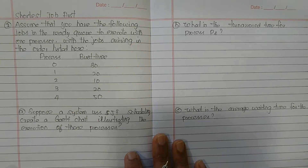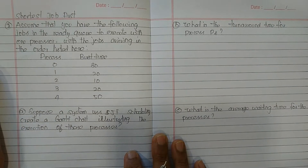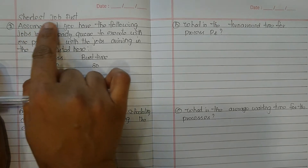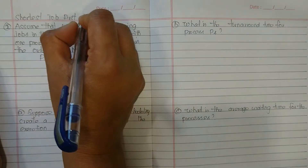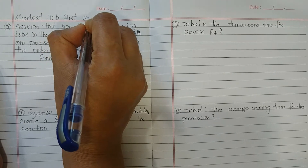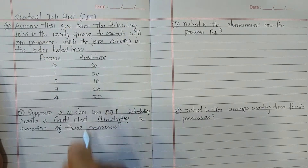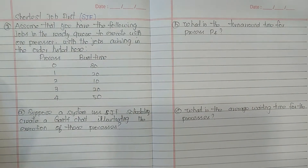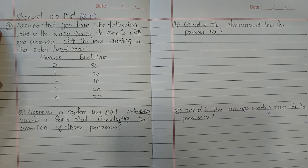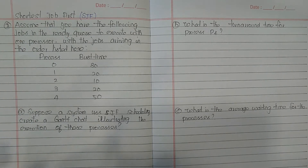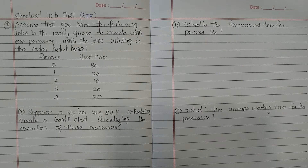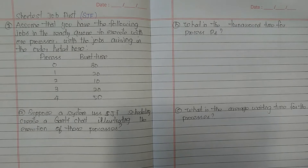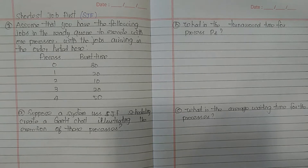Good morning. In this video we will discuss another CPU scheduling algorithm: Shortest Job First scheduling, or SJF for short. The idea of Shortest Job First is that in the ready queue we have a list of processes waiting for execution. The scheduler picks the next shortest job and schedules it to the CPU for execution.